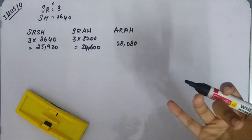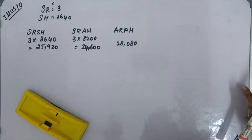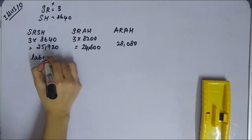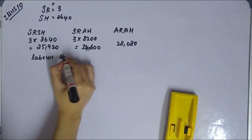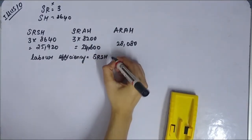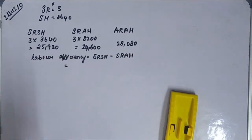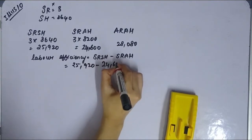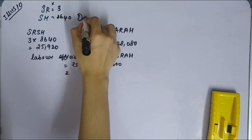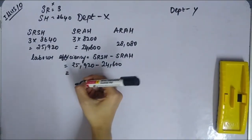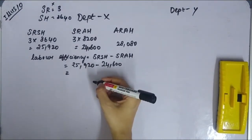For Department X labor efficiency variance: the formula is SRSH minus SRAH. That is 25,920 minus 24,600 = 1,320, which is Favorable.